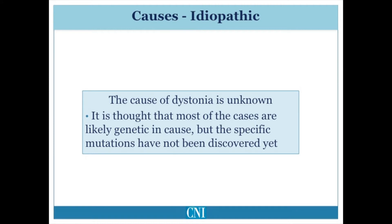Idiopathic means that we have not yet discovered the cause. It is thought that most cases of idiopathic dystonia are, in fact, due to a genetic cause, but we have not yet discovered the specific gene mutations responsible for the patient's dystonia.